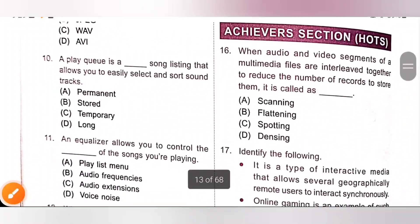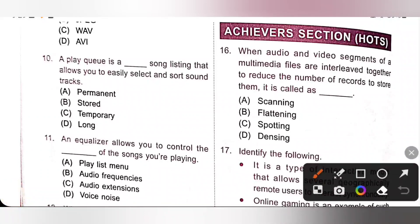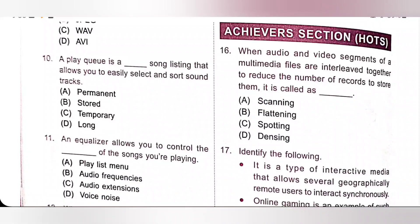Achiever section. Sixteenth: when audio and video segments of your multimedia files are interleaved together to reduce the number of records needed to store them, it is called flattening. Flattening is performed to combine all the work to produce the final result and to save the amount of memory needed to store individual files. Option B is the correct answer.